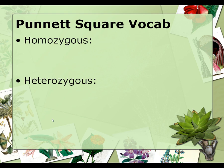Quick review on homozygous and heterozygous. You know what the prefixes homo and hetero mean, but you may not know what zygous means. Zygous refers to a zygote — the result of an egg and a sperm fusing together. It is that initial cell that will soon grow into a baby, and it's called a zygote.